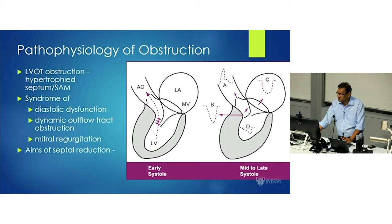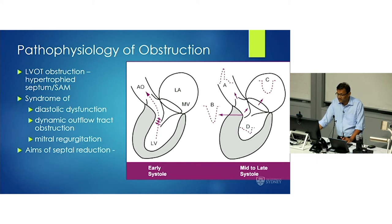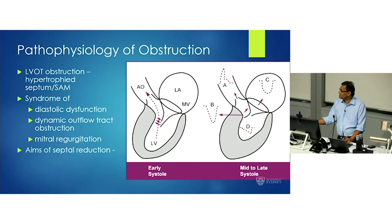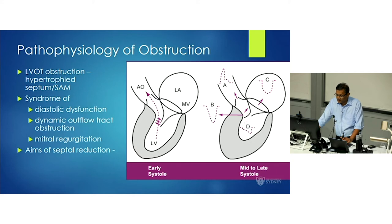If you look at the pathophysiology of the obstructive form, you get asymmetrical hypertrophy of the septum, resulting in increased velocity across the outflow tract during systole, where the Venturi effect causes the mitral valve to be sucked against the left ventricle, causing dynamic outflow tract obstruction, diastolic dysfunction, and mitral regurgitation. The aims of septal reduction are to reduce the hypertrophy, lower the velocity, and improve those effects.